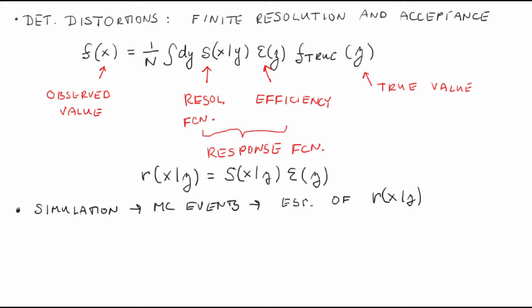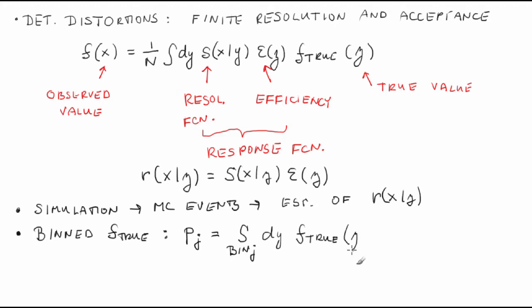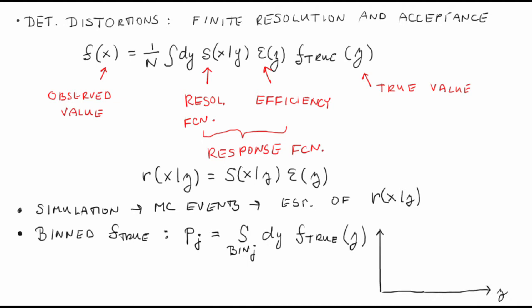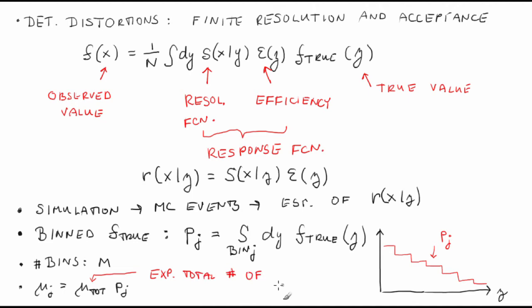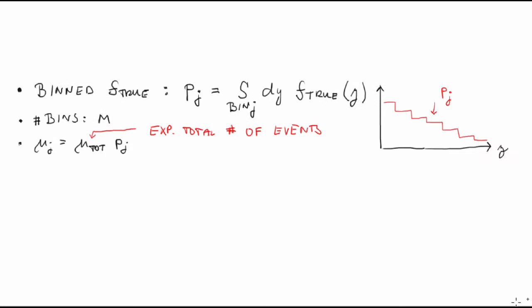Let's start with a mathematical formulation of the unfolding. We don't have any parametrization of the true pdf — we know nothing about it. However, we need to represent it by a finite set of parameters. Therefore, we bin it. p_j = ∫_{bin j} dy f_true(y). Obviously, p_j is a probability for a true value y to fall into bin j. Let's choose the number of bins of the true distribution to be m. We also define μ_j = μ_tot × p_j, where μ_tot is the expected total number of events. So these are our true quantities.